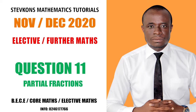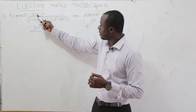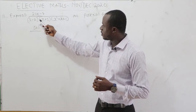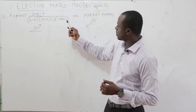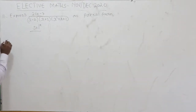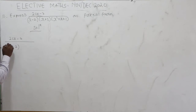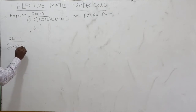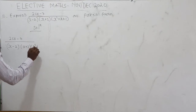NOVEC 2020 question number 11: express (21x minus 7) over (x minus 2)(x plus 3)(x squared plus x plus 1) as a partial fraction.